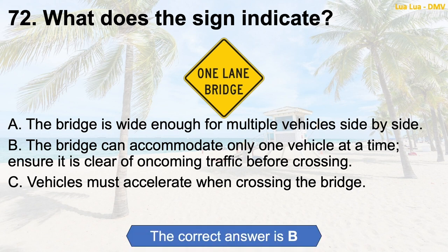Question 72: The correct answer is B: The bridge can accommodate only one vehicle at a time — ensure it is clear of oncoming traffic before crossing.